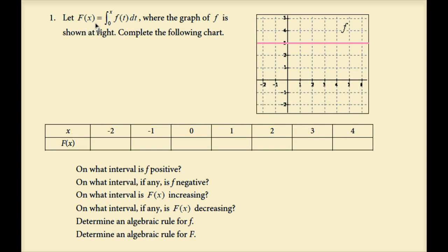Let uppercase F of x equal the integral from 0 to x of lowercase f of t dt, where the graph of f is shown at right. Complete the following chart. The lower endpoint of integration is 0, which means that will be your starting point in calculating areas to the right or to the left. We're going to find F of negative 2 first, which means we'll need the area from 0 to negative 2. When you go backwards to calculate an area, the function value will be the opposite sign of whatever the area is.